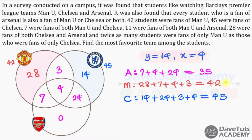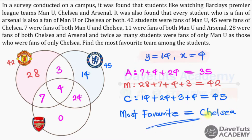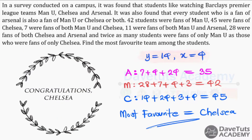With Arsenal at 35, Man U at 42, and Chelsea at 45, Chelsea remains the team with the highest number of fans. So the most favorite team is Chelsea — champions they remain! This is a great example of how understanding sets and Venn diagrams helps us interpret and solve such questions. Christine, your answer is Chelsea!